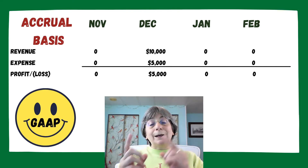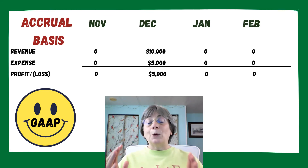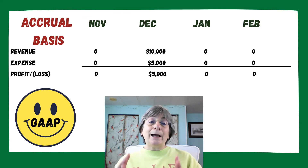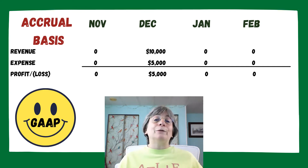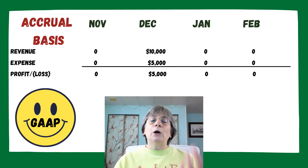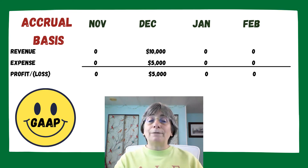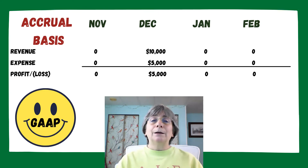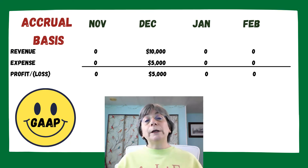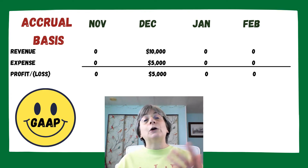Because nothing happened in January or February — we didn't sell anything and we didn't buy anything — we end up with a profit of $5,000 in December. With the cash example, if we looked at the whole period from November to February, we did have a $5,000 profit overall. So it ends up being the same after some period of time, but we aren't able to see profitability as well under cash as we are under accrual. With accrual, we know that in December we had a profit: $10,000 in revenue, it cost us $5,000 to make that revenue, and we had a profit. It's perfectly acceptable for a small business to use cash-based accounting, but they could just as easily choose accrual-based accounting.